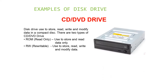Another example of a disk drive is the CD/DVD drive, used to store, read, write, and modify data on compact discs. There are two types: ROM, or read-only memory, which is used only to store and read data, and RW, or rewritable, which is used to store, read, write, and modify data.